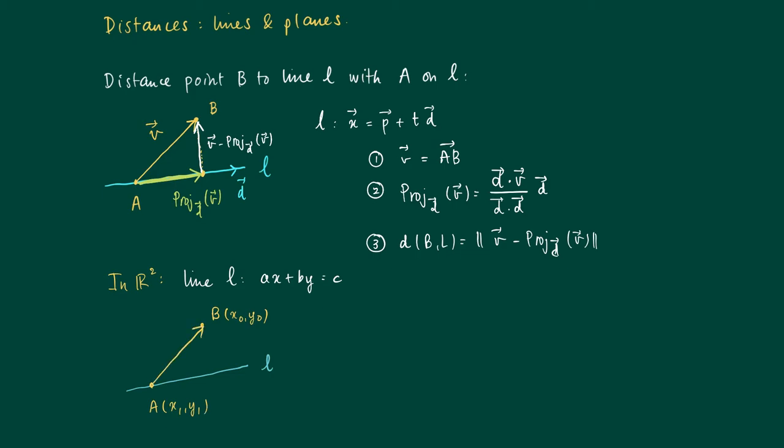We can construct the vector V is AB, which is now the difference between the coordinates: X zero minus X one and Y zero minus Y one. We know that we have a direction vector D here, and we may construct the normal of the line. The normal of a line exists in R2 but not in other dimensions.